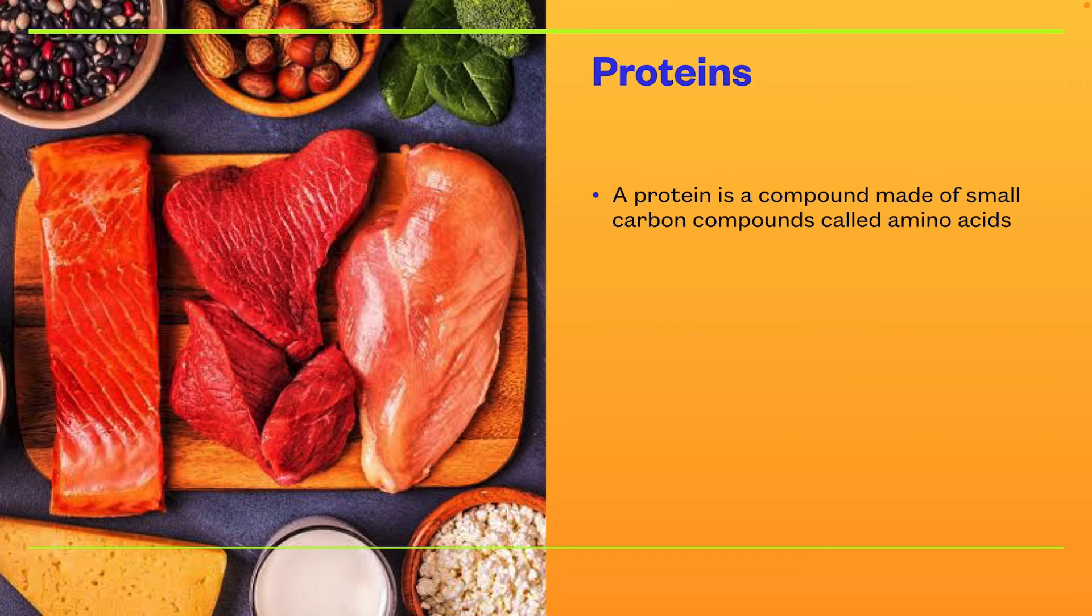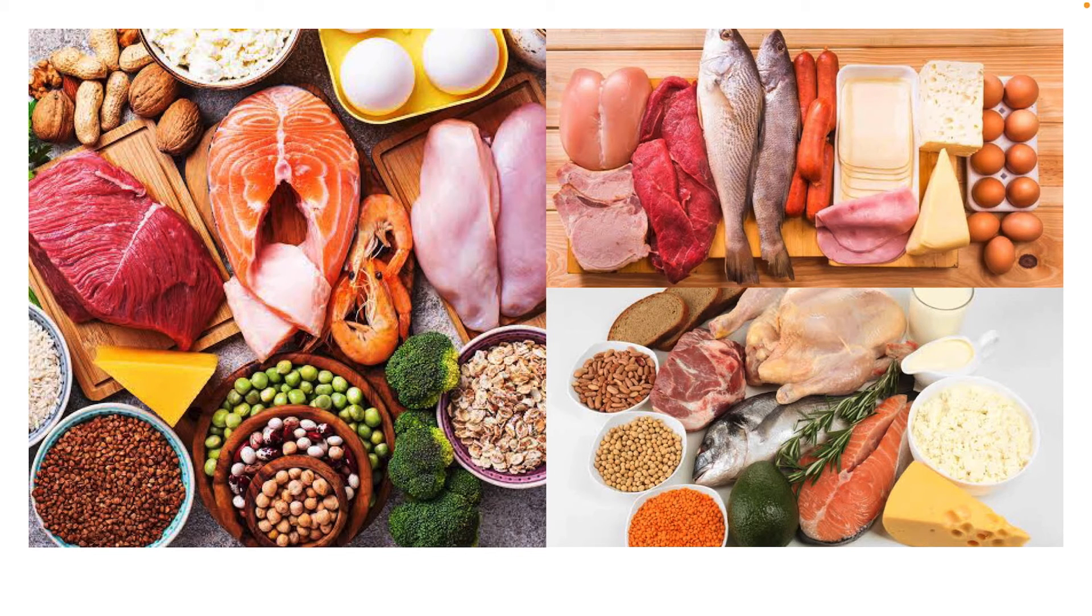Proteins. A protein is a compound made of small carbon compounds called amino acids. And this is the type of foods that have protein: fish or salmon, sausages, red meat, white meat, eggs, and sometimes Swiss cheese, even milk as well.